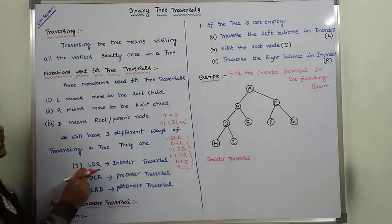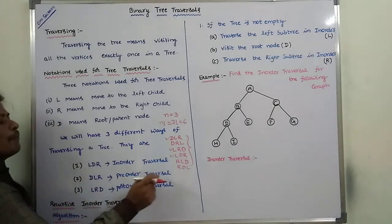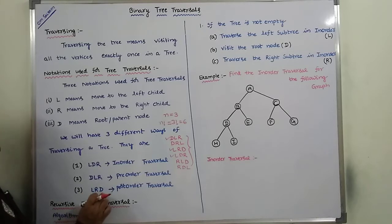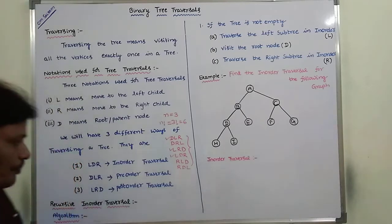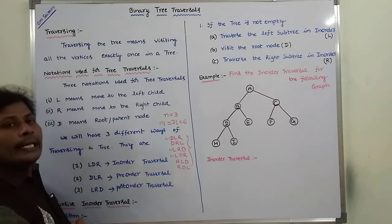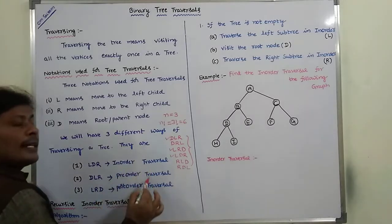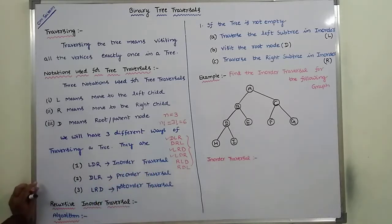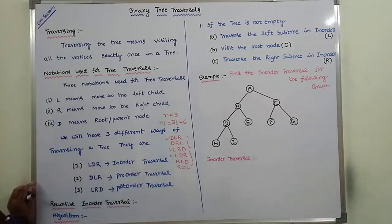The first one is LDR, which is nothing but in-order traversal. DLR is nothing but pre-order traversal, and LRD is post-order traversal. These three traversal techniques are used from the computational point of view, and they can be of recursive nature or non-recursive nature — both recursive algorithms and non-recursive algorithms exist for these three traversals.